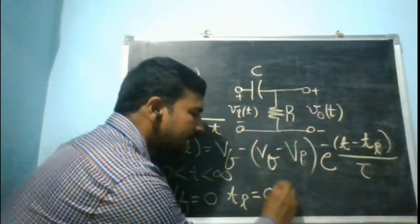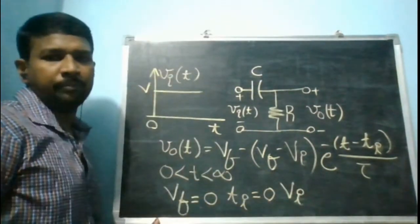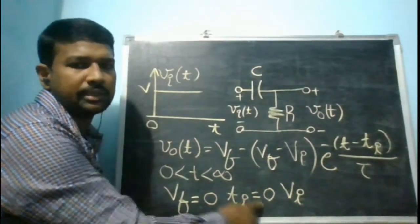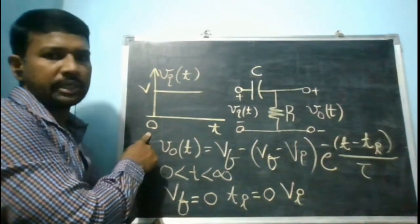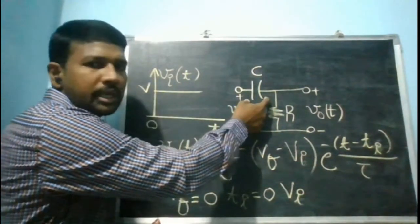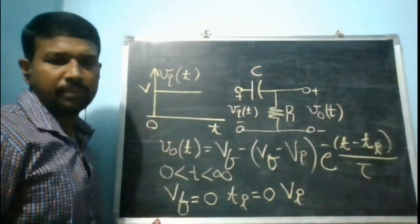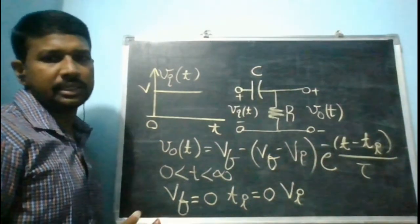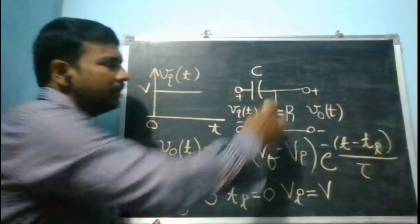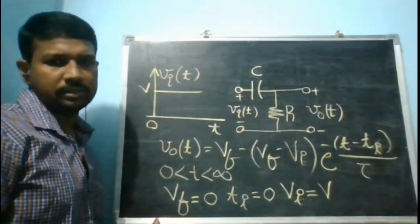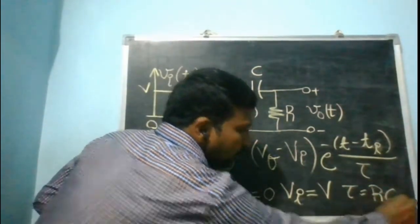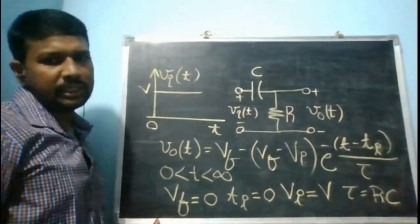VI is the output voltage at t = tI, which is at t = 0. At t = 0, the input suddenly changes from 0 V to V volts. The capacitor voltage cannot change instantaneously, so the entire input voltage V appears across the resistor. Therefore VI = V. The time constant τ = RC.